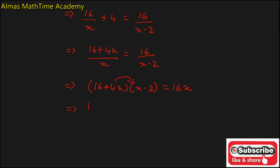Now multiply the two terms in the LHS. You will be getting 16x minus 32 plus 4x square minus 8x is equal to 16x. Now from both the LHS and RHS, 16x and 16x got cancelled. The remaining is 4x square minus 8x minus 32 is equal to 0.